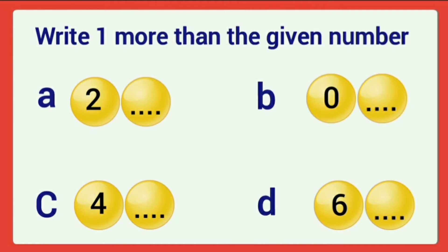Next worksheet: write one more than the given number. Here the numbers are given. We want to write the one more than the given number. First, number is two. One more than two is three. Write in the given space. Next one: zero. One more than zero — we want to count one forward from zero. It is one. Write one.